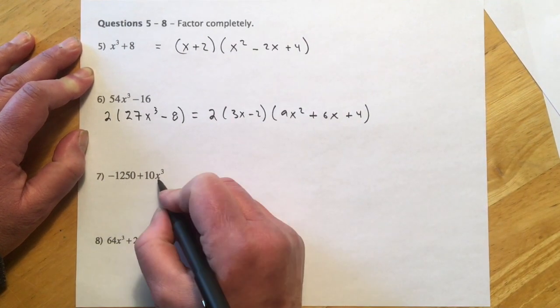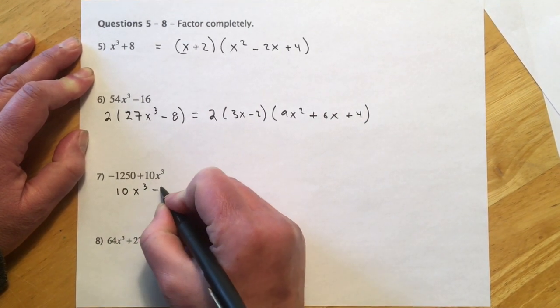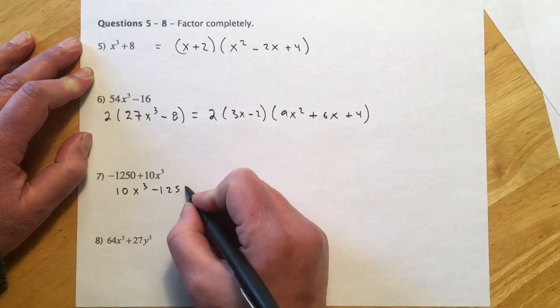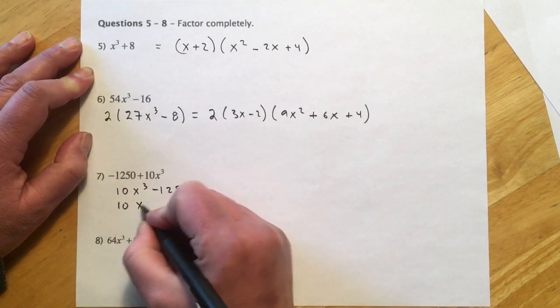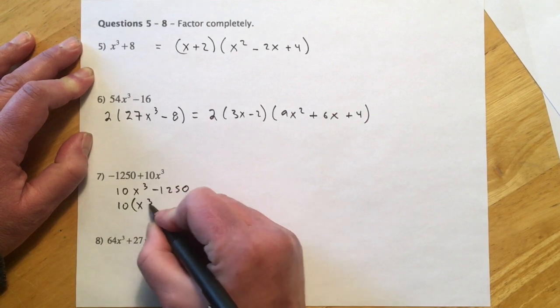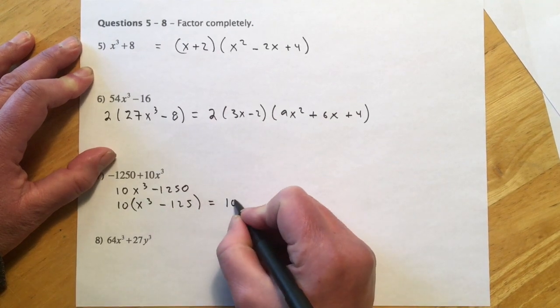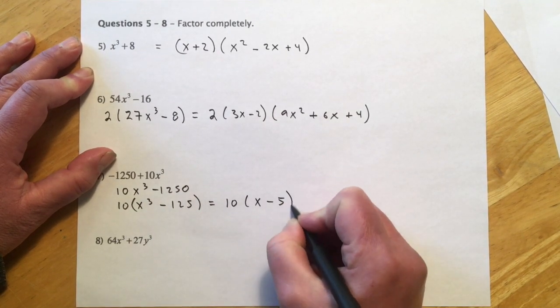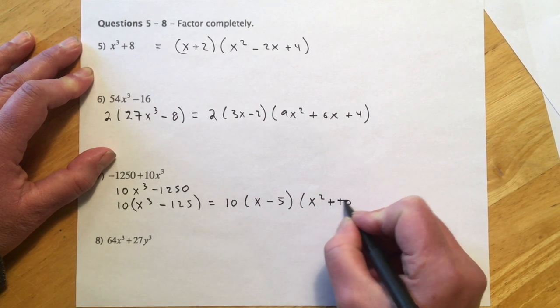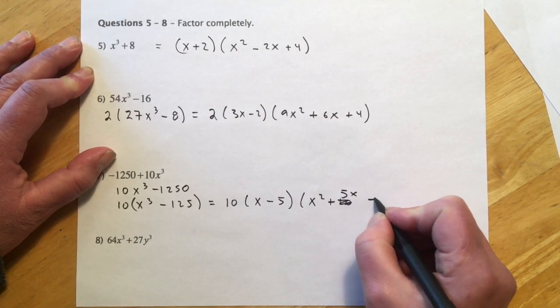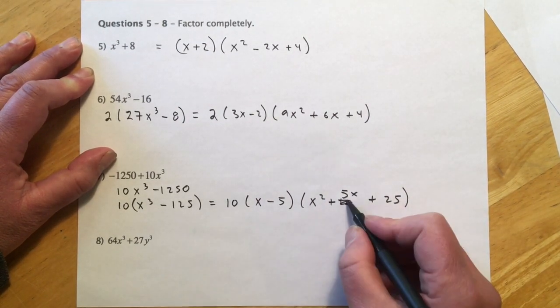Here's the one that's like the one I did that's written kind of backwards. So that will be 10x³ minus 1,250, and then let's get a 10 out of there, because that will make it look better. And then I can see my cubes, so I got 10, and then x minus 5, x² plus 5x, and then plus 25, again same, opposite, positive on the signs.